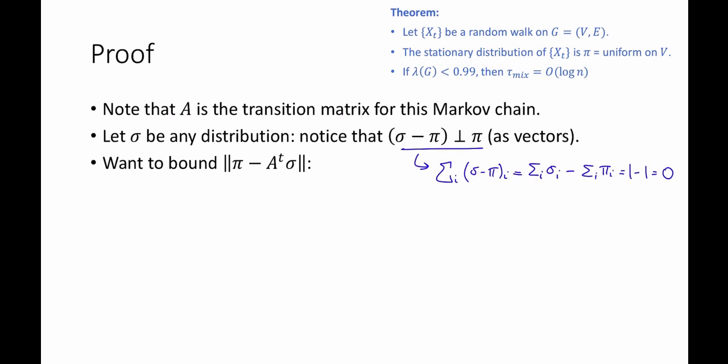But then the inner product of pi with this vector is just 1 over n times this sum, so that's going to be 0. So these two things are orthogonal.